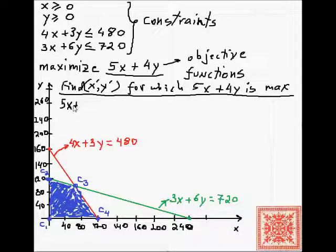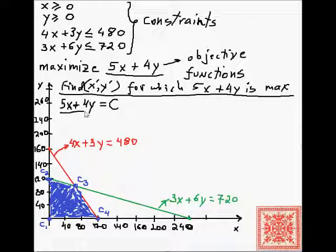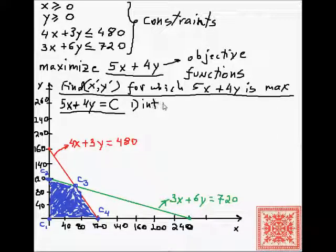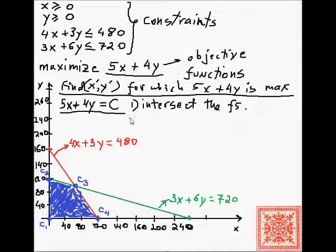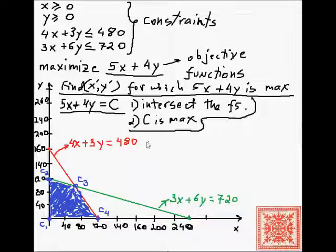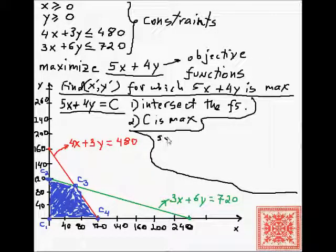We can reformulate this problem slightly differently. We need to find the line 5x + 4y = C for which C is as large as possible, and the optimal point x-prime, y-prime will lie on that line. It cannot be an arbitrary line — it must intersect the feasible set. That is the first requirement, and the second requirement is that C is maximum.